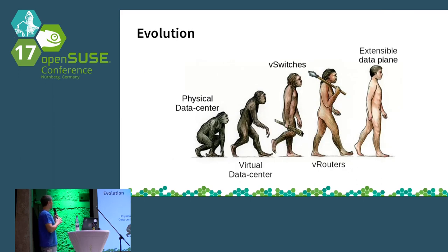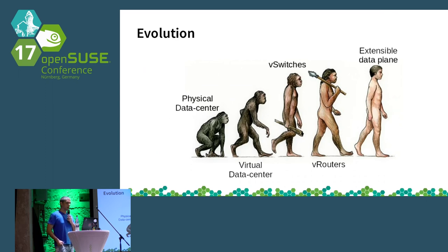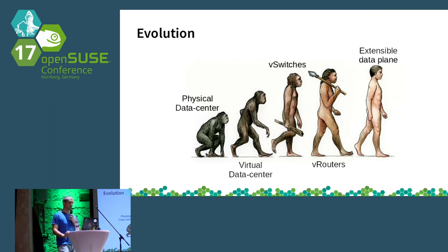This picture tries to give you an idea of the evolution of the data center. We started with everything being in a physical bare metal environment, then introduced the virtual data center with virtualization for compute. Then there was the introduction of vSwitches and then vRouters. In recent years we've also seen more use of extensible data planes — things like BPF, eBPF, and XDP from the IOVisor community, which offer great configurability and programmability of data planes on Linux.